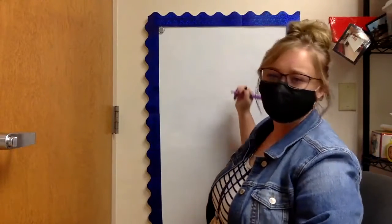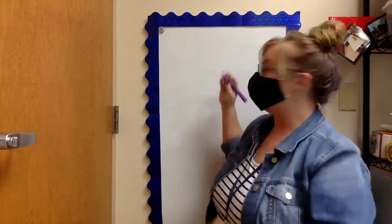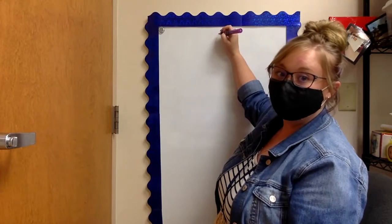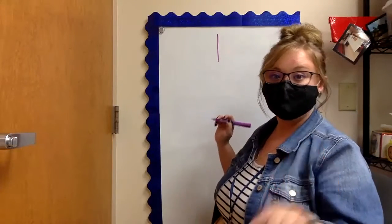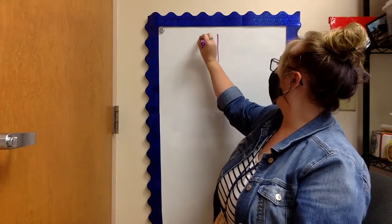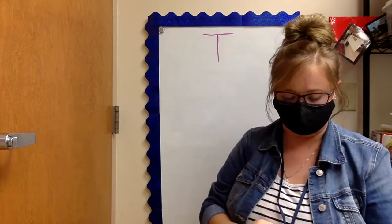Okay, letter T. Where do we start? At the top. Good job. And we're going to do a big line down. Step. And then a little line across. At the top. Good job.